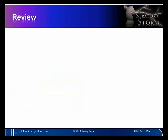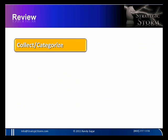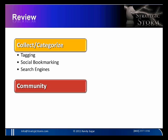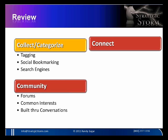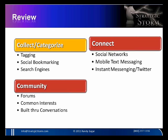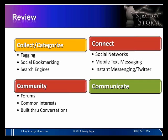Let's review the four C's. Collect and categorize: includes tagging, social bookmarking, and search engines. Communities: forums, common interest groups, built through conversations. Connect: social networks, mobile text messaging, and instant messaging like Twitter. And finally, communicating: blogs, videos, podcasts, video blogging, and video sharing.